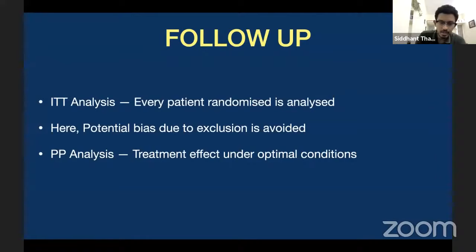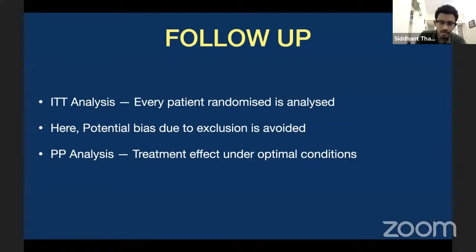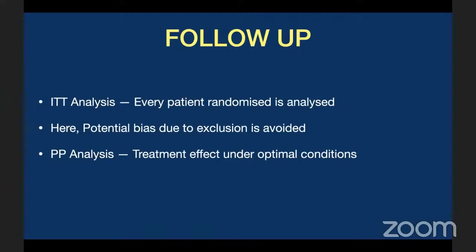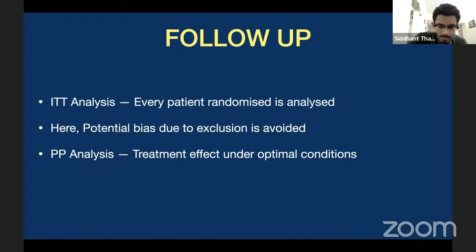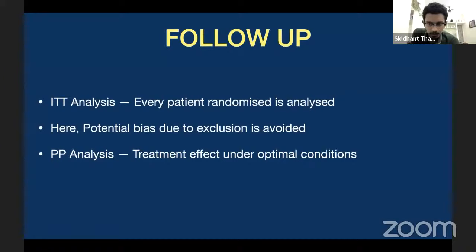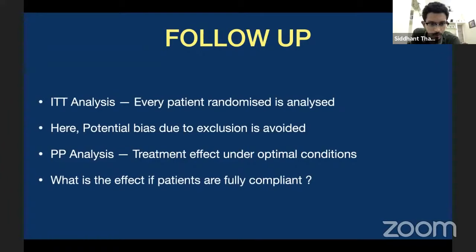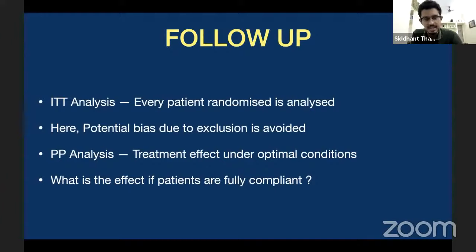Per protocol analysis means: what is the treatment effect under optimal conditions, despite having a loss to follow-up? What is the effect if patients are fully compliant — those who remain in the study? So you have two analyses: intention to treat and per protocol analysis. Intention to treat means you intend to treat all randomized patients and whatever number was randomized will be included in the results table — for example, 96 patients in milrinone, 96 in dobutamine, and in the results table you have 96 and 96. That is your ITT analysis.